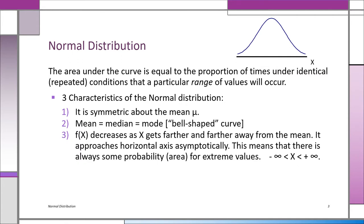Let's look at some of the properties of the normal distribution — the famous bell-shaped curve. Three key characteristics: First, it's symmetric about the mean, meaning the right side looks exactly the same as the left side. Second, the highest point is right in the center: the mean equals the median equals the mode. That's why it's called a bell-shaped curve.